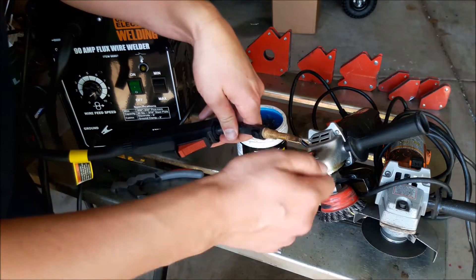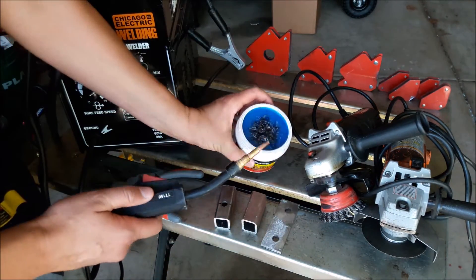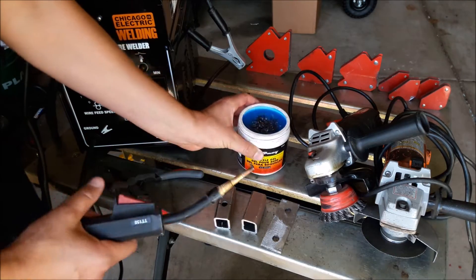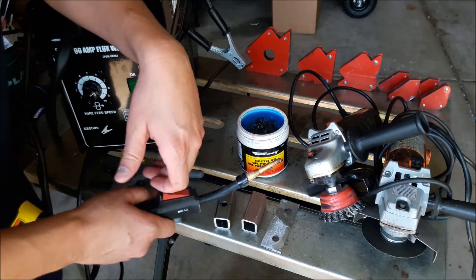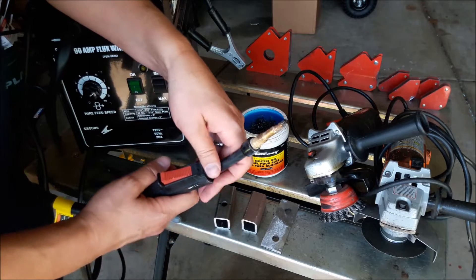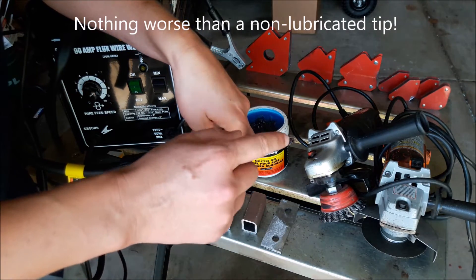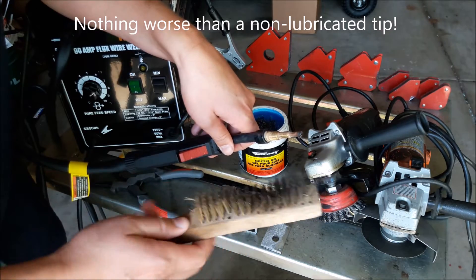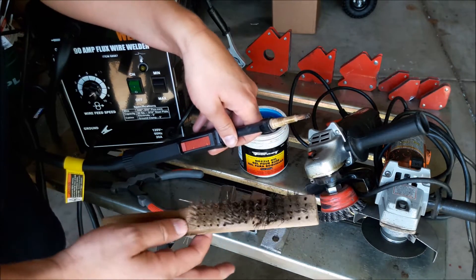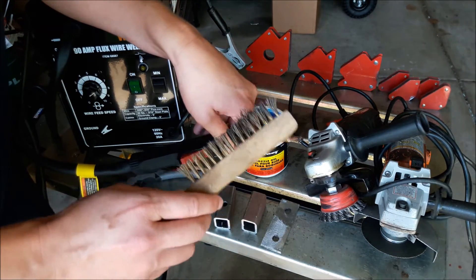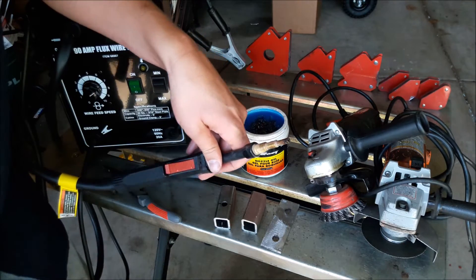So you're sitting there with your pliers trying to pull it off, knock that stuff off. Well, you dip the tip in the nozzle gel every once in a while and it puts a nice little lubricated coating over that so anything that collects on there, a quick little pass with the wire brush and it's clean, you won't be changing out your tip so often.